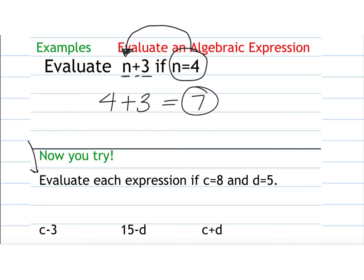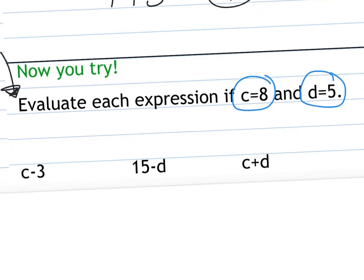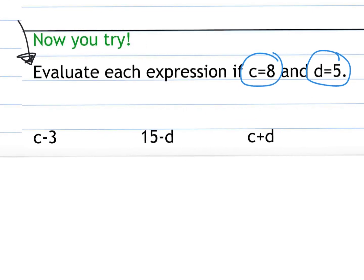Okay, you pause the video and try these problems down here and then come back and unpause and check. So we have c equals 8 and d equals 5. So I'm always going to rewrite just so that I'm clear as to what I'm doing. I'm not going to try to do it in my head, even though you probably can, because as we get more, we want to get used to rewriting them. So if you didn't write them down, make sure you write them down so you're used to practicing substitution. So c minus 3, instead of c, I'm going to write 8. So 8 minus 3 equals 5. 15 minus d, which is the same as 15 minus 5, because d equals 5. 15 minus 5 is 10. And then c plus d, well, I know c is 8, d is 5. Add them together, 8 plus 5 is 13.